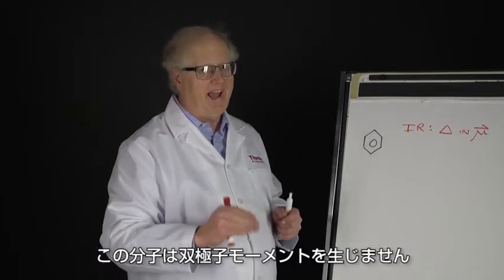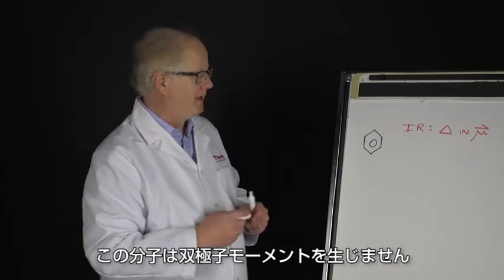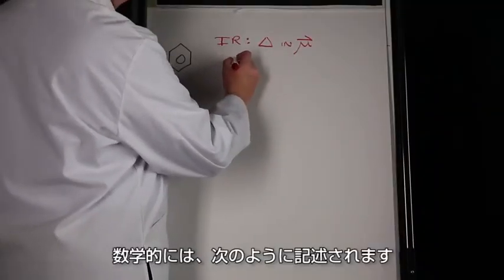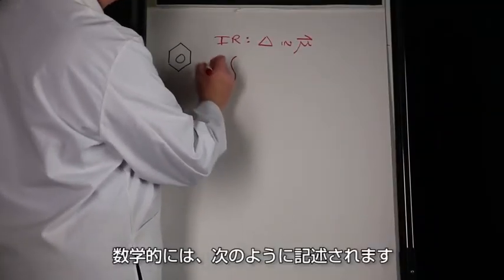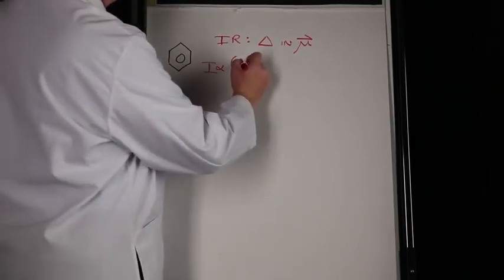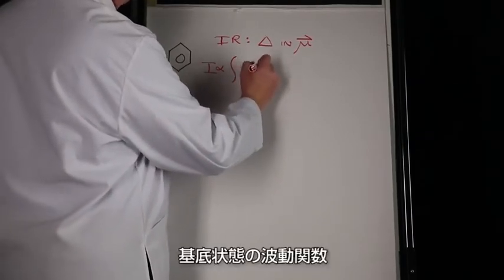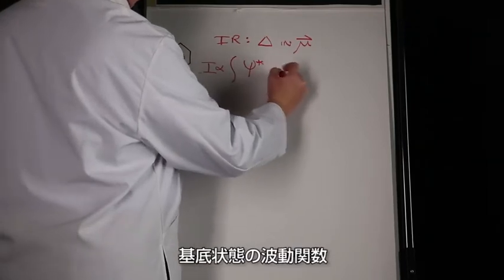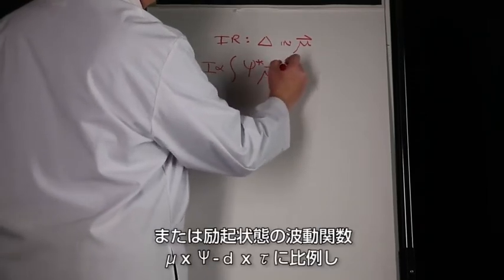Mathematically, the way this is stated is that the intensity is proportional to the ground state wave function or the excited state wave function, mu, psi B tau.